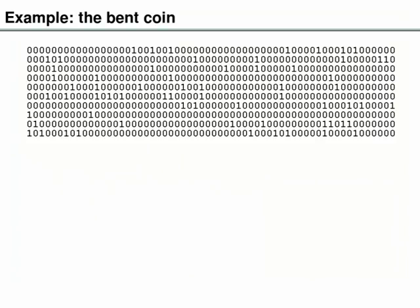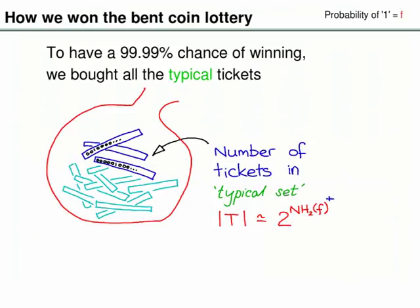The way we arrived at the proof was by imagining playing the bent coin lottery to win for the mafia boss. We found a big sack full of tickets and imagined writing a new name for each ticket on the reverse. We counted the tickets in the bag and found we had 2 to the n times the entropy. That was our proof of the source coding theorem for the bent coin.